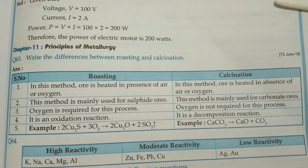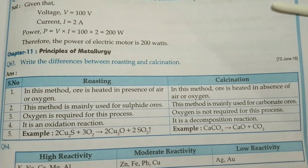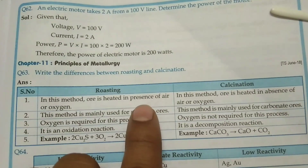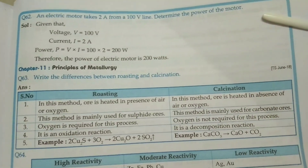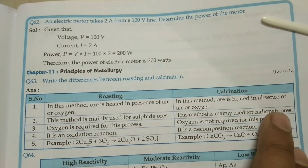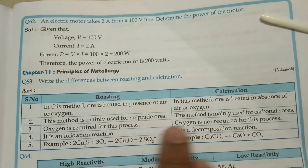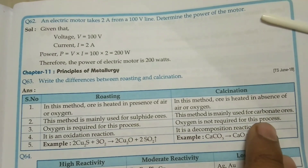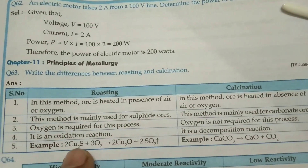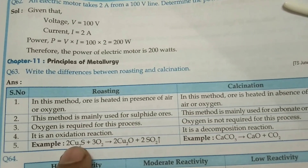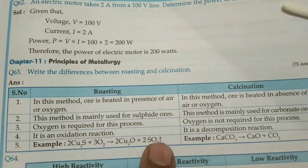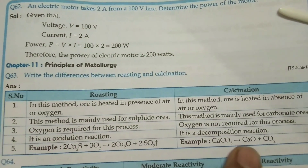Also, they may ask: Write the difference between roasting and calcination. In roasting, ore is heated in the presence of air; in calcination, ore is heated in the absence of air. Roasting is mainly used for sulphide ores; calcination is mainly used for carbonate ores. Roasting requires oxygen and is an oxidation reaction; calcination does not require oxygen and is a decomposition reaction. Example of roasting: 2Cu₂S + 3O₂ → 2Cu₂O + 2SO₂. Example of calcination: CaCO₃ → CaO + CO₂.